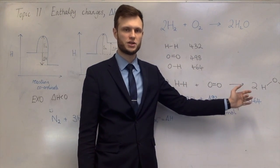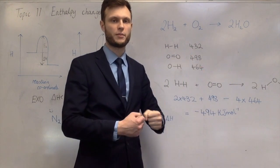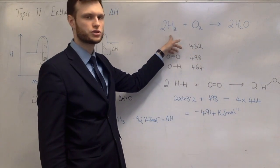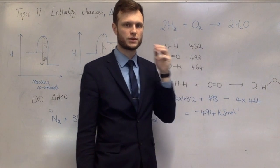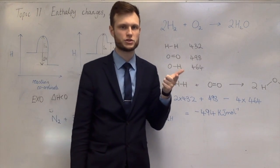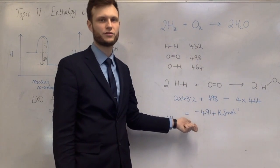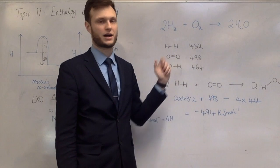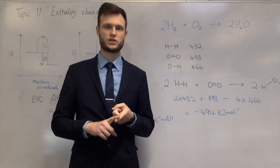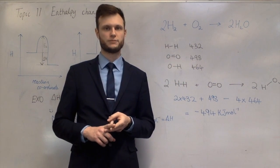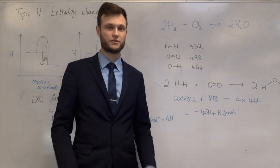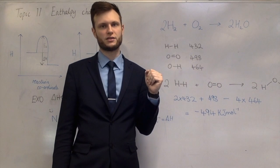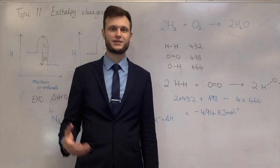The bond-breaking values are positive because you put energy in; the bond-making values are subtracted because making bonds is exothermic. This calculated energy should be twice the enthalpy change of combustion of hydrogen, and twice the enthalpy change of formation of water — so those two values should be equal and half of this total. The actual standard enthalpy change of combustion of hydrogen is minus 286 kJ mol⁻¹, making the expected total minus 572 kJ mol⁻¹ — significantly different from the average bond enthalpy calculation, which is why experimental values are preferred.